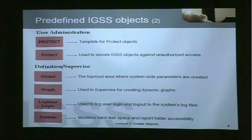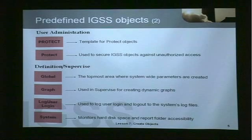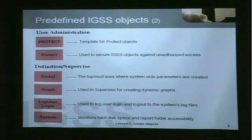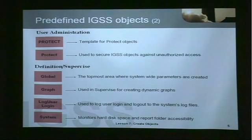In the definition supervise modules, we have the global object, which we've seen in the presentation of areas and diagrams — this is the topmost area where system-wide parameters are created. Then we have an object called graph, used in supervise for creating dynamic graphs that the operator typically uses while monitoring the plant. Then we have the log user login object, used to register and identify users that log on and off the system — the prerequisite being that the configuration is set up with the user administration security module. And finally, the system object, which monitors hard disk space and report folder accessibility.